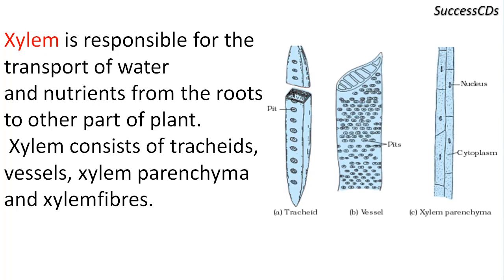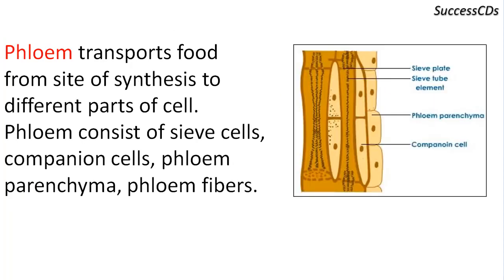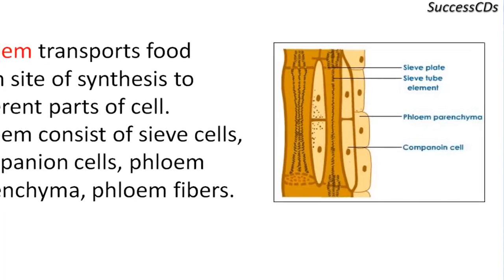Next is xylem parenchyma. These are living cells that store food and nutrients. Lastly, xylem sclerenchyma cells are dead and they provide mechanical support to the plant. Now, phloem tissue transports food from the site of photosynthesis to different parts of the plant.